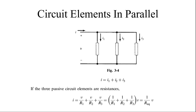We are going to see the continuation of the last session. Now we are going to see circuit elements in parallel. If you see three elements connected in parallel, the voltage across the elements is the same — this element has potential difference V, this element also has potential difference V, this also has potential difference V. So the potential difference across every element is the same because it is connected in parallel.